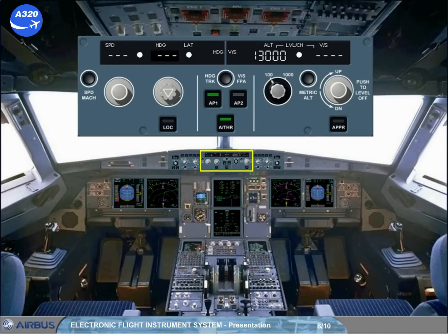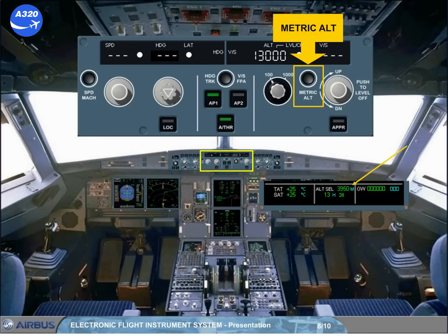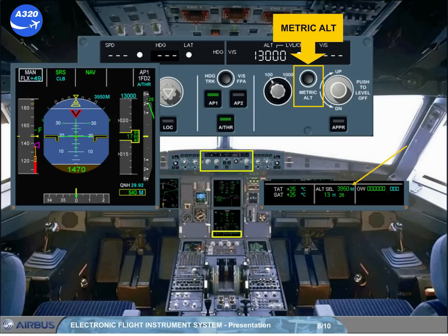The metric altitude pushbutton is also part of the altitude area. This pushbutton is used to display the selected altitude in meters on the permanent data part of the system display, and as an option, the selected and actual altitudes in meters on the PFDs.